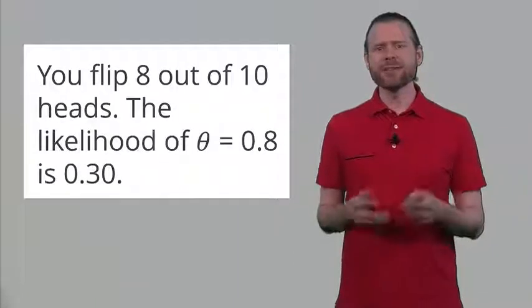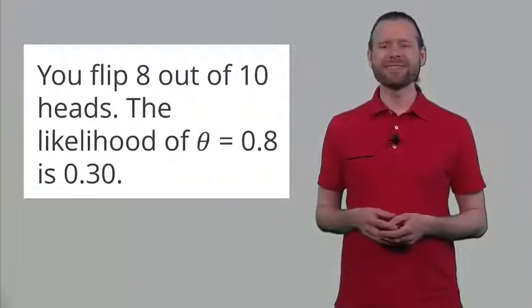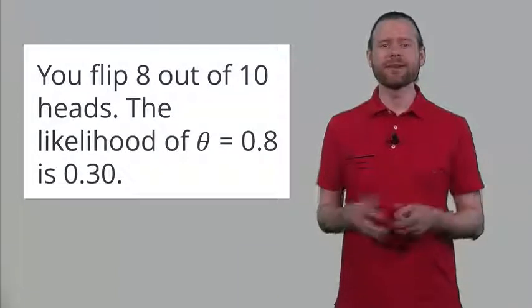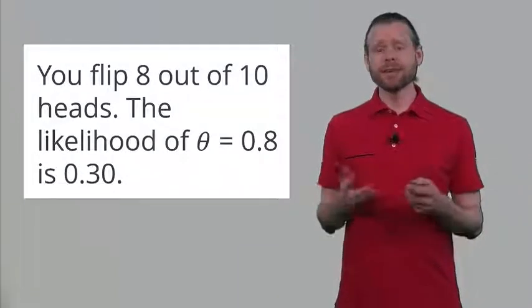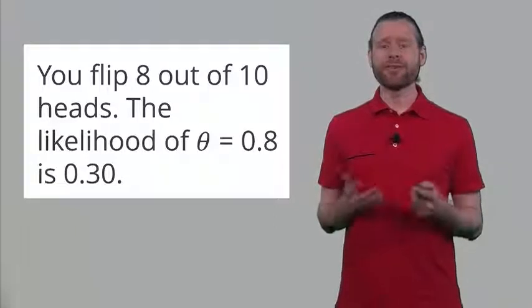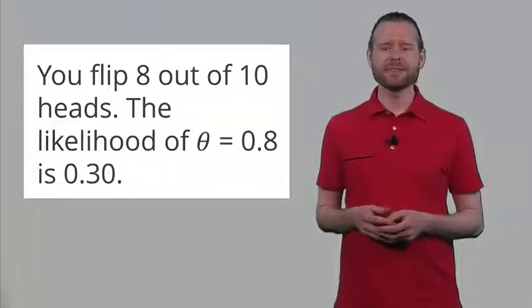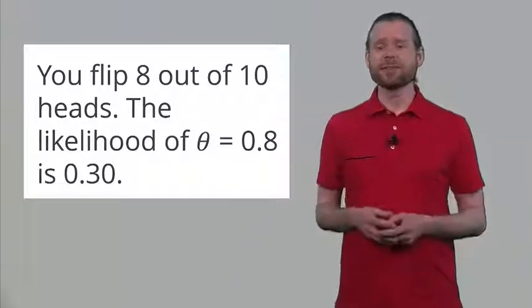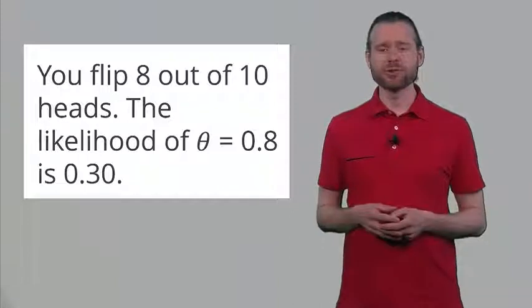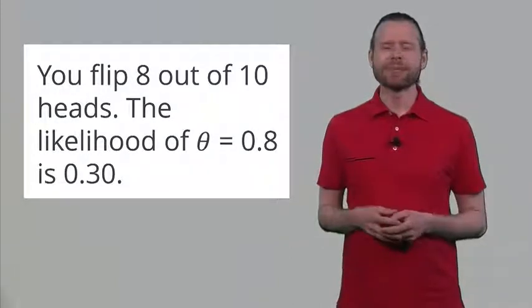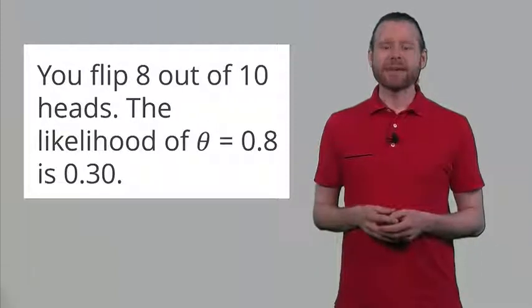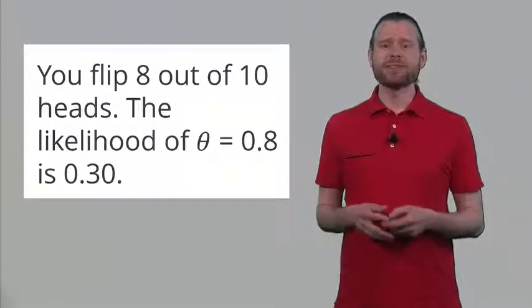For now, let's take a look at the situation where we flip a coin ten times. Eight of these ten times we find that the coin comes up heads. We can calculate the likelihood of theta, which is a Greek letter representing the true hypothesis. In this case, we might assume the true underlying probability of heads in the long run is 0.8, and for theta = 0.8, the likelihood is 0.30.